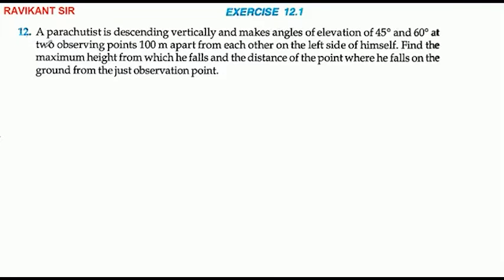Hello students, I am 12.1, Question number 20. A parachutist is descending vertically and makes an angle of elevation of 45 degrees and 60 degrees at two observation points 100 meters apart from each other on the left side of himself. Find the maximum height from which he falls and the distance of the point where he falls on the ground from the just observation point.